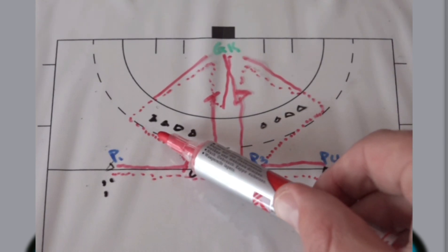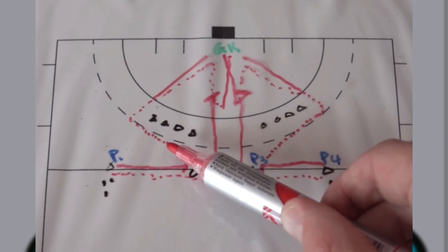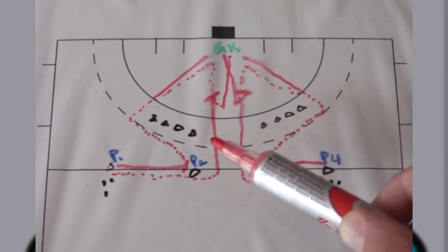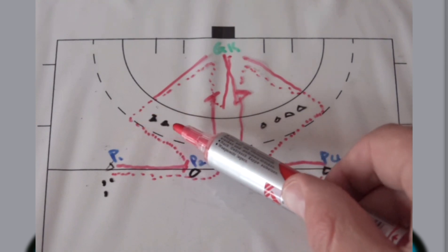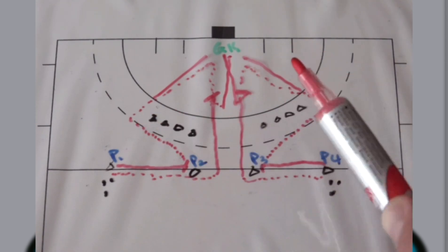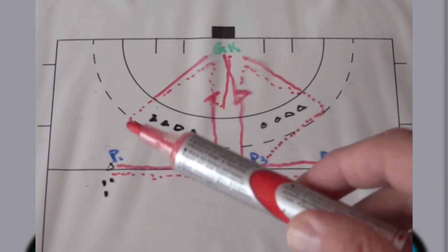You as a coach can progress it. You can maybe put some cones in there so they can do 3D skills to get past the defender or get past the defender's trailing stick. You can upgrade it as you see fit.